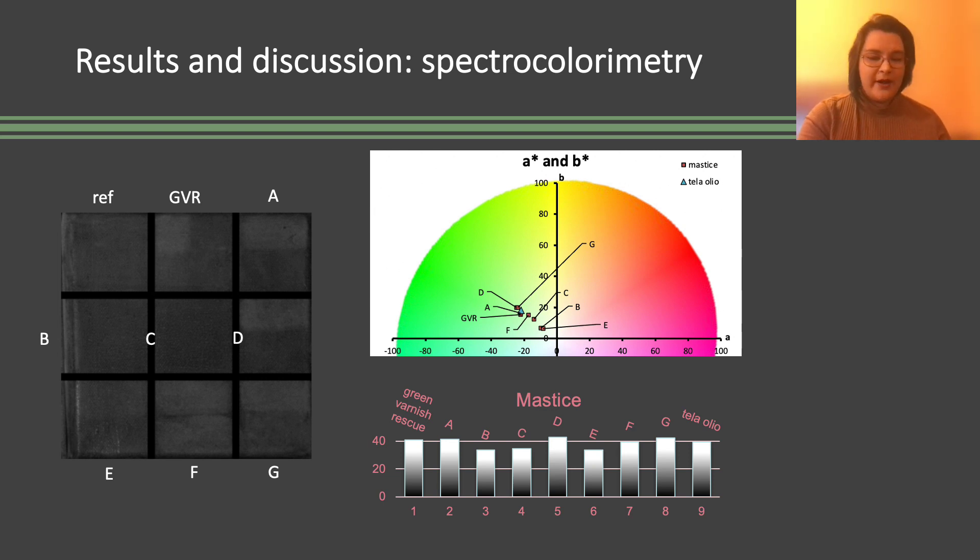All measurements were compared to the canvas without varnishes. In the mastic case we observed that squares B, C, and E tend to darker and yellower tones, and that is due to the presence of aged varnish residues.